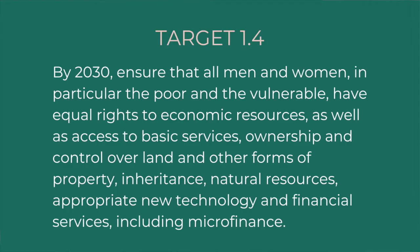Target 1.4: by 2030, ensure that all men and women — in particular the poor and vulnerable — have equal rights to economic resources, as well as access to basic services, ownership and control over land and other forms of property, inheritance, natural resources, appropriate new technology, and financial services including microfinance. There are generally three major components: access to basic services, tenure and legal holding over property and resources, and general provision for access to finance and technology.